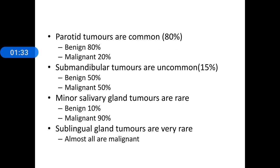Regarding gland-wise, site-wise incidence: parotid tumours are the most common and account for 80%, of which 80% are benign and 20% are malignant. For submandibular gland tumours, 50% are benign and 50% are malignant. Minor salivary gland tumours are rare and 90% of them are malignant. Sublingual gland tumours are nearly 100% malignant.